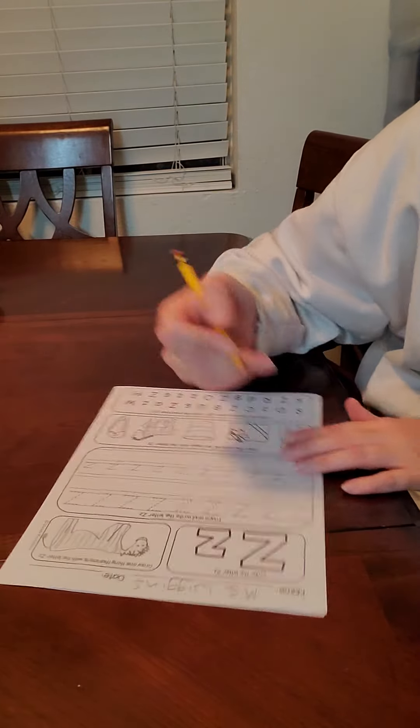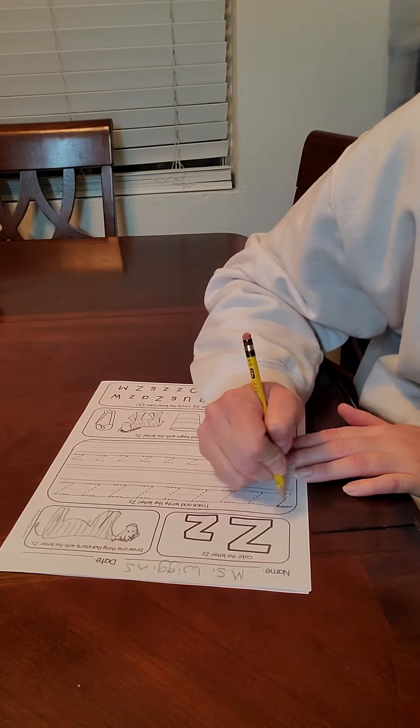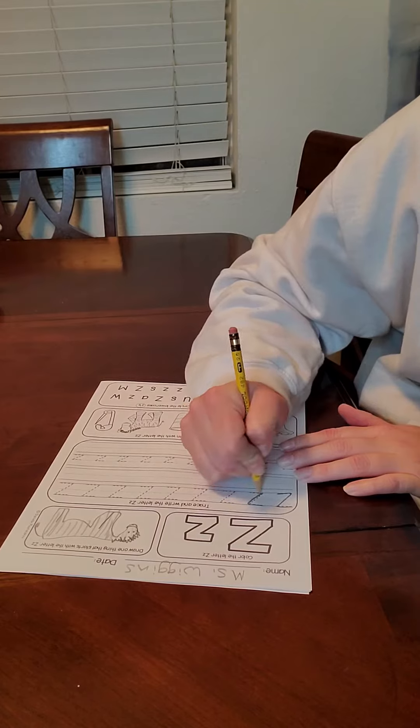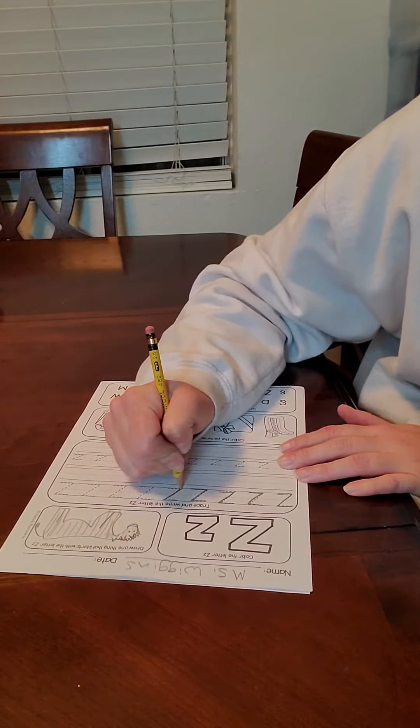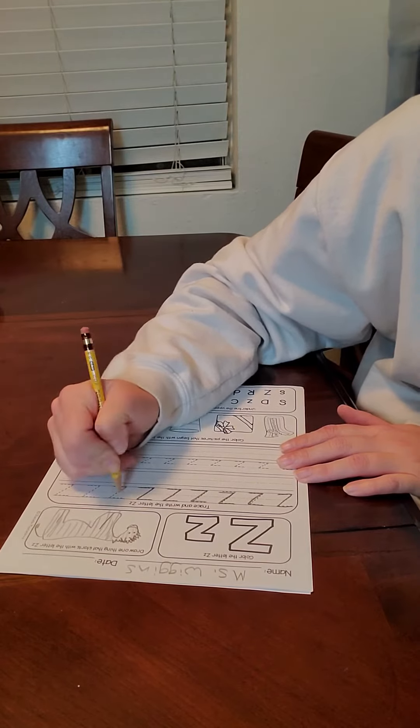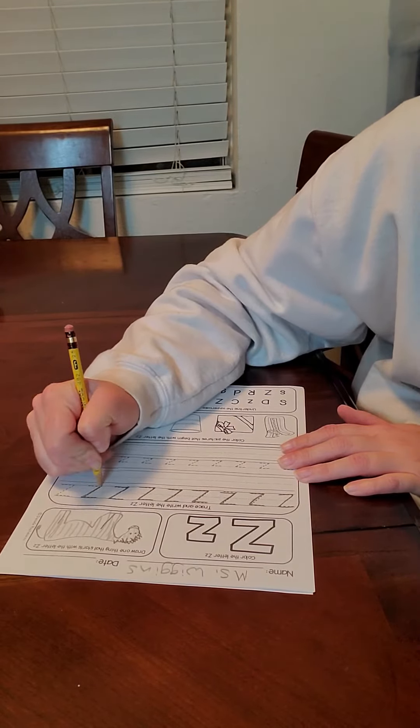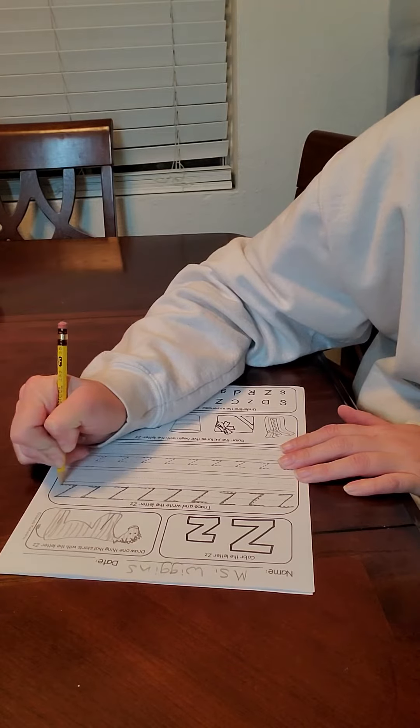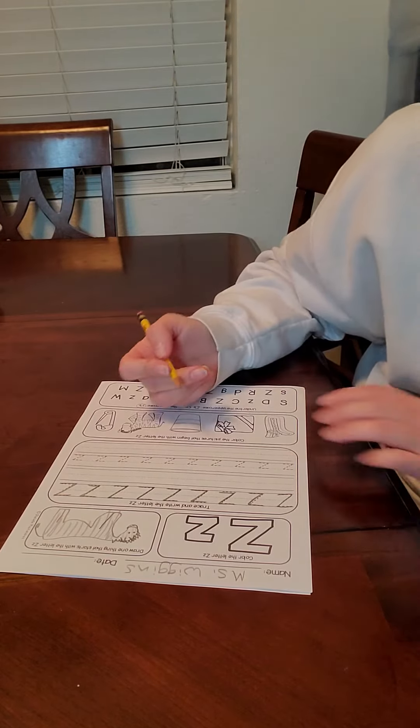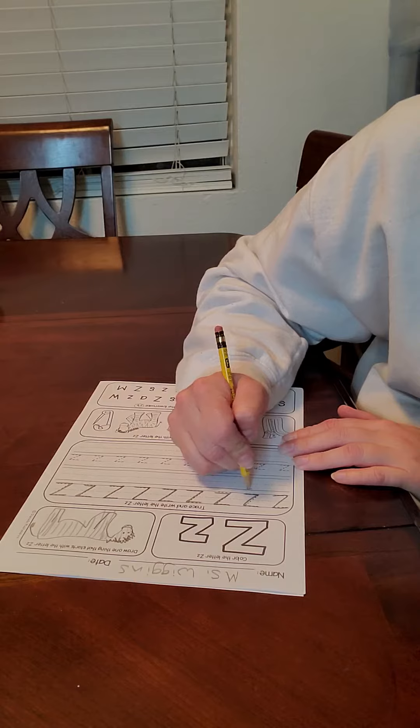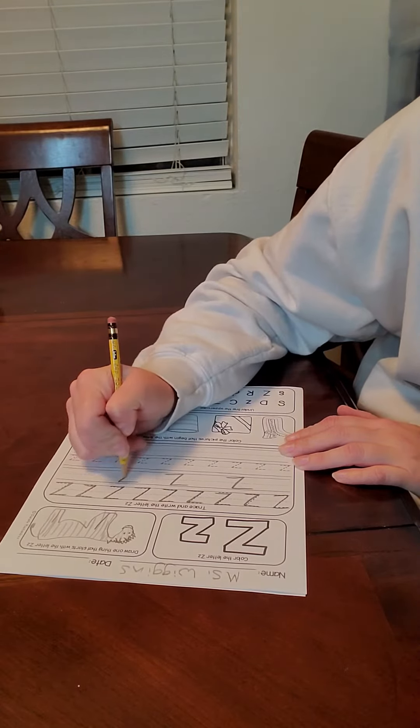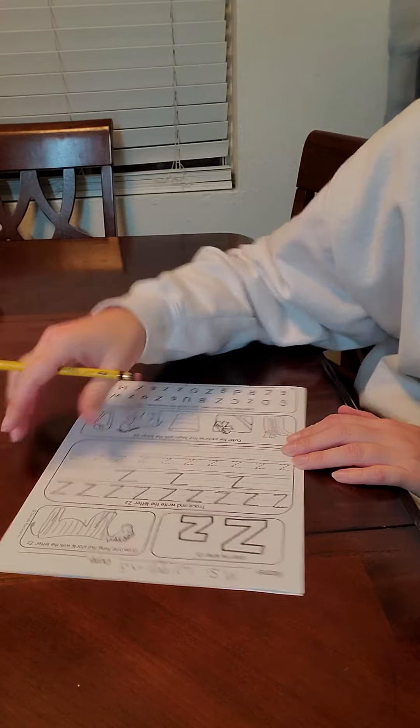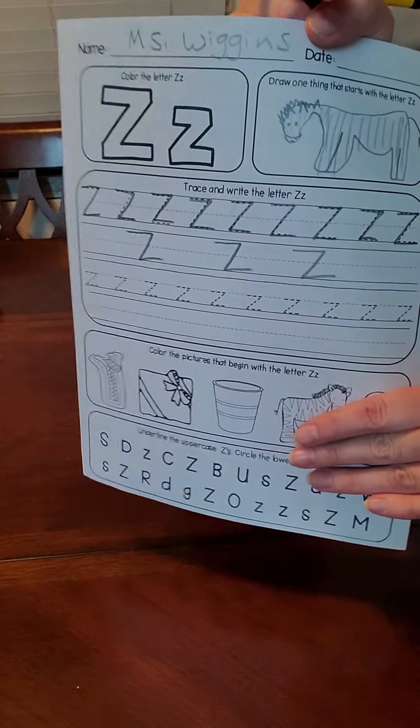All right, go ahead and trace your uppercase Z's. And then we're going to write three uppercase Z's all by ourselves. So an uppercase Z is a line across the top, a diagonal line down, and a straight line across the bottom. So let's go ahead and do that. One, two, three. So it should look just like that.